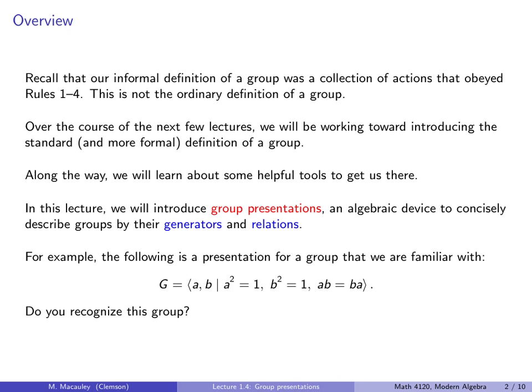For example, the following is a presentation for a group that we are familiar with. What group has two generators, let's call them A and B, with the properties that A squared is equal to 1, B squared is equal to 1, and AB equals BA? Can you think of a group like that? What about the rectangle puzzle? Let's let A and B be horizontal flip and vertical flip. This is the Klein 4 group, or the rectangle group.